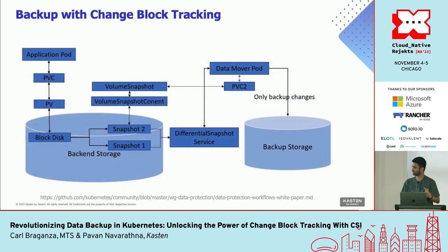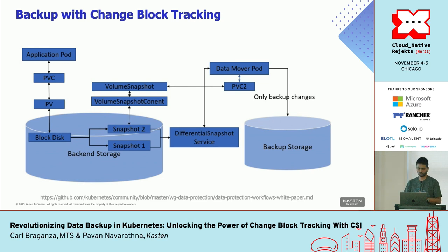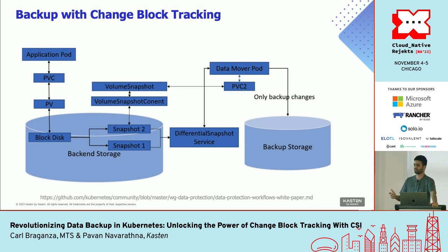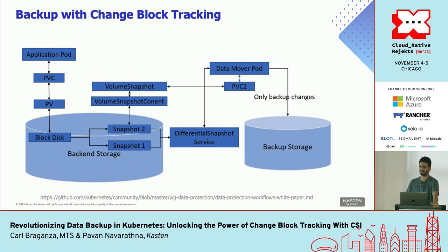The white paper provides a diagram for this — this is how the final solution would look. The application pod has a PVC and PV, and somewhere in the backend storage the block disk is stored. We use volume snapshot APIs to create multiple snapshots, and when taking a new snapshot, the backup application spins up a data pod, mounts the volume snapshot as a PVC, and calls the differential snapshot or CBT service to get the changes and store them in some sort of external storage.